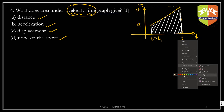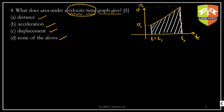Take any time t, and corresponding to that time t, the velocity is v. Now take a very small time gap — a time t plus delta t. Draw a vertical line to find the corresponding velocity value. At time t plus delta t, the velocity is v plus delta v. So at time t the velocity of the object is v.